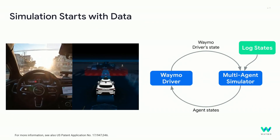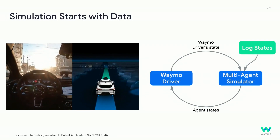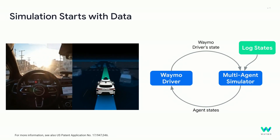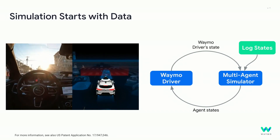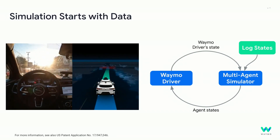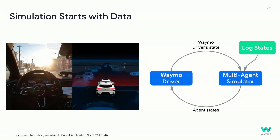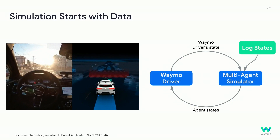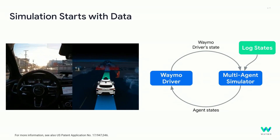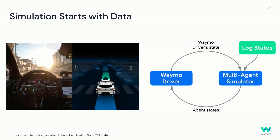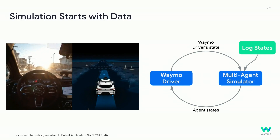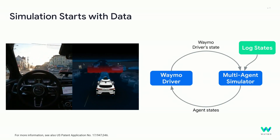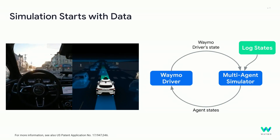Even in simulation, everything starts with data. It's not just that the agents in the simulator are trained from data using imitation learning — the unfolding of the simulation itself is data driven. Every simulation rollout is paired with a real-world run segment. A run segment is basically a joint trajectory consisting of log states recorded by the Waymo car, as well as traffic light states, road layout information, and so on. The rollout begins by placing the Waymo driver in the same initial state as the Waymo car at the beginning of the run segment, and spawning an agent at the initial state of each other road user. As the simulation unfolds, the Waymo driver diverges from the log behavior because it's controlled by different software than was used when the data was collected.